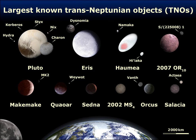Centaur 2060 Chiron was discovered in 1977, and precovery images from 1895 have been located. Another extreme case of precovery concerns Neptune. Galileo observed Neptune on both December 28, 1612 and January 27, 1613, when it was in a portion of its orbit where it was nearly directly behind Jupiter as seen from Earth. Because Neptune moves very slowly and is very faint relative to other known planets of that time, Galileo mistook it for a fixed star, leaving the planet undiscovered until 1846.